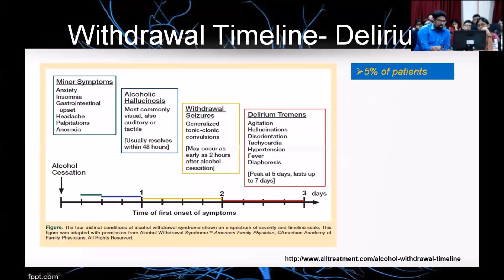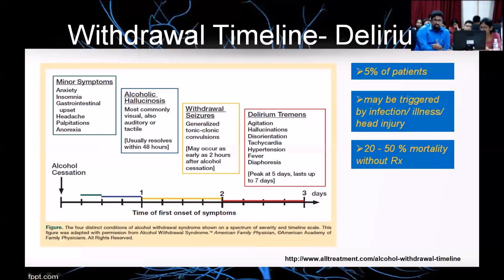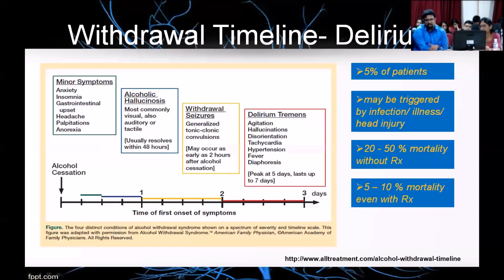Delirium tremens occurs in around 5% of patients. It may be triggered by infection, illness, or head injury — important to note because delirium is usually multifactorial. Treating just alcohol withdrawal may not help when other factors are triggering or worsening delirium. Without treatment there is around 20–50% mortality. With treatment it varies between 5% and 10%, with more recent research putting it at around 5%.